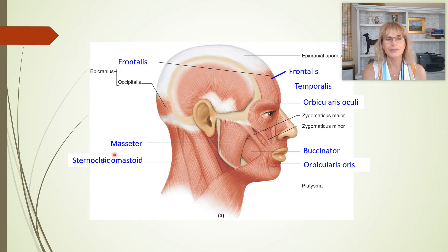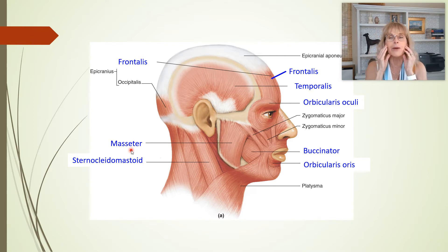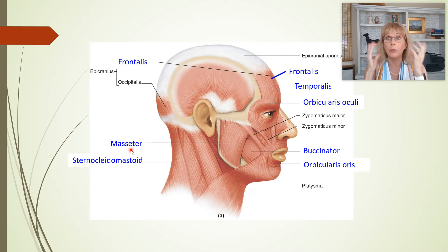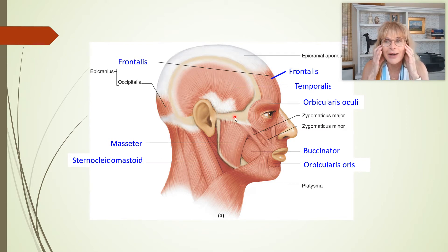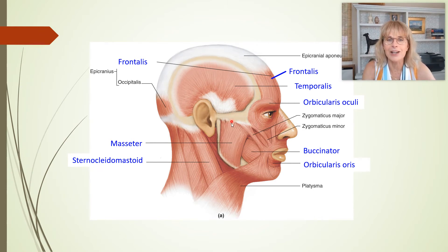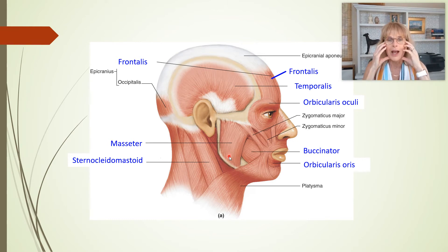The masseter — my TAs very often pronounce it 'the mass eater' so people can remember it. It's the one that allows you to close your jaw. This right here is the zygomatic bone and the zygomatic process of the temporalis — your cheekbone, the zygomatic arch. The masseter is attached there and down to your mandible. When it shortens, you close your jaw.